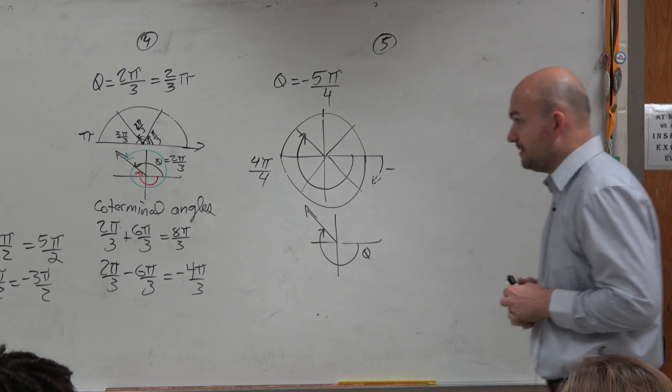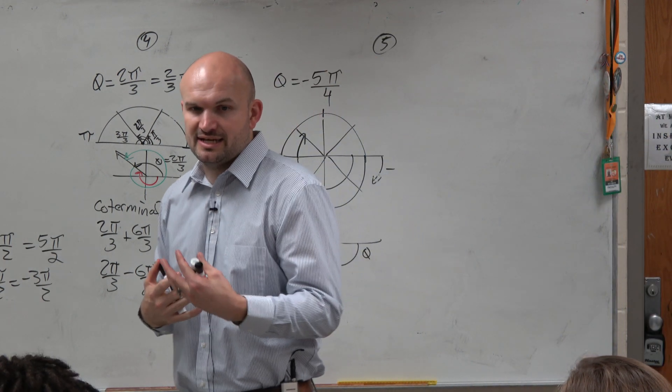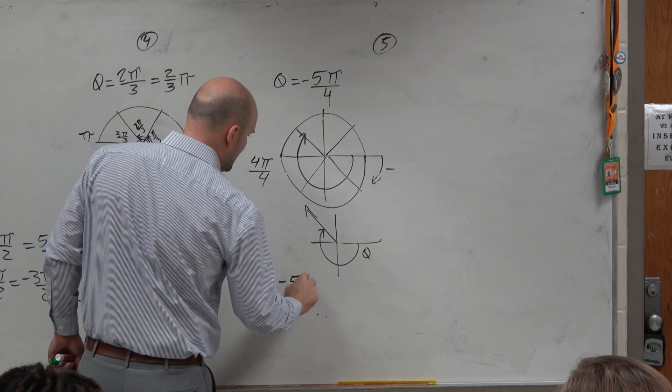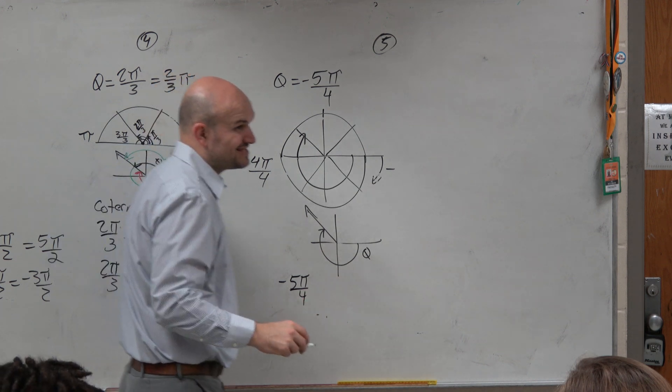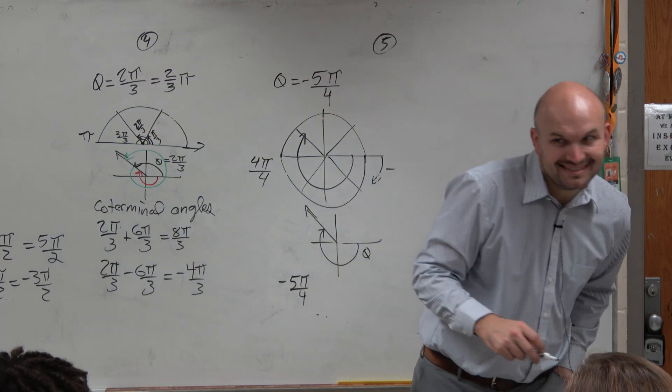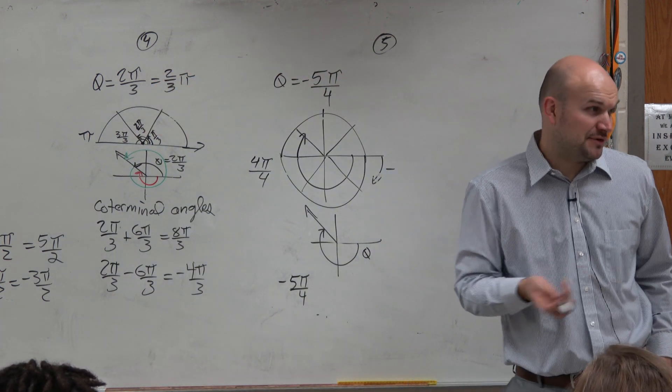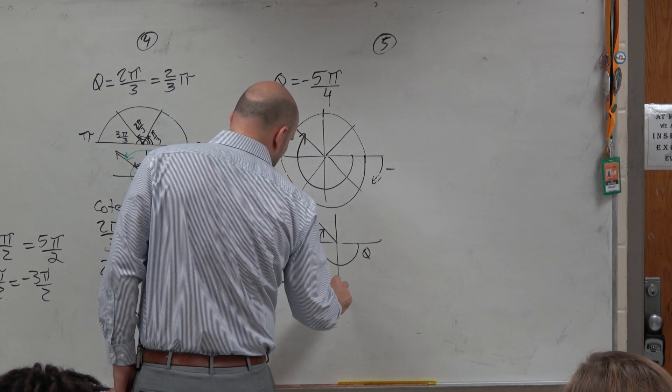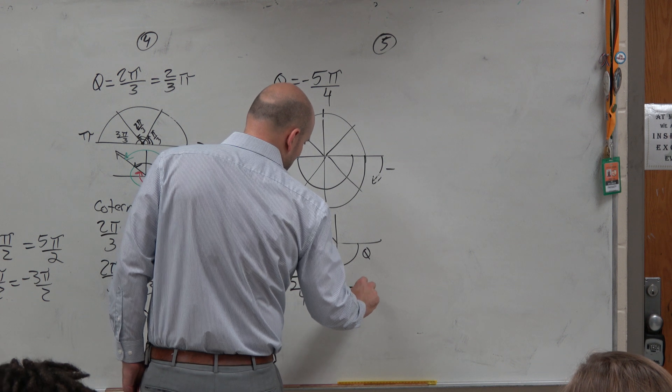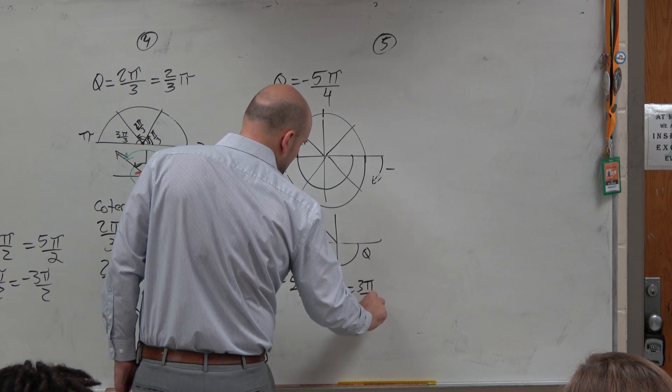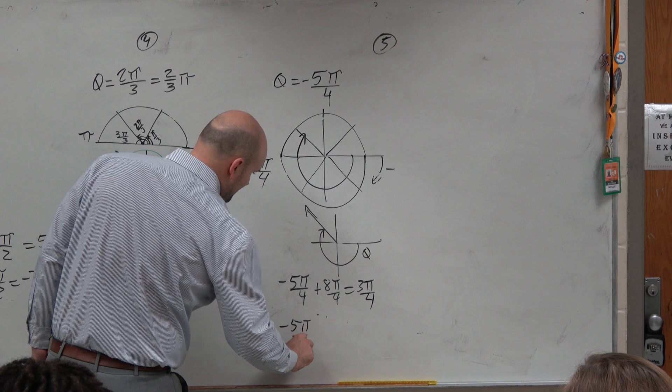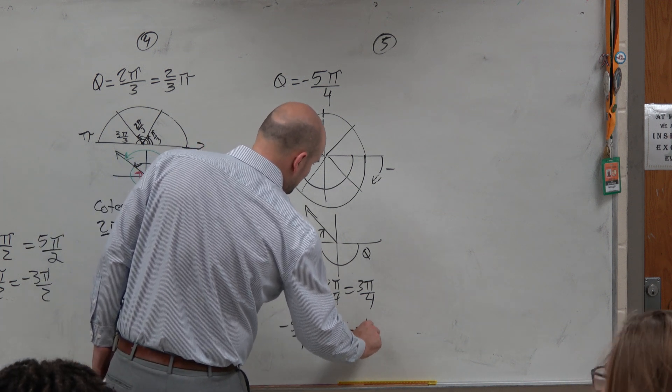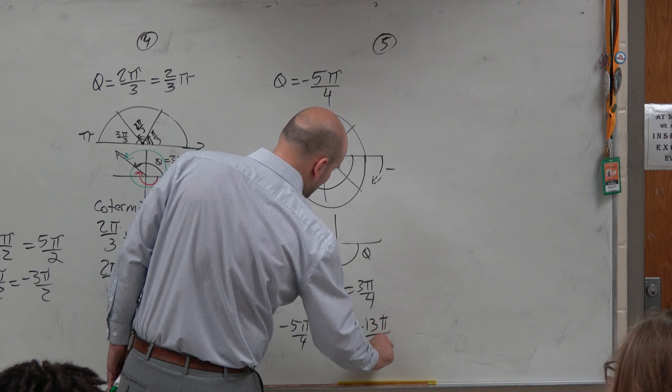Now let's go and find co-terminal angles. Again, the basic idea is just to add and subtract. So if we look at this, what is 2 pi in terms of fourths? 6 pi over 3? No? 8 pi over 4. So why don't we add 8 pi over 4? That gives me 3 pi over 4. And let's do negative 5 pi over 4 minus 8 pi over 4. That gives me negative 13 pi over 4.